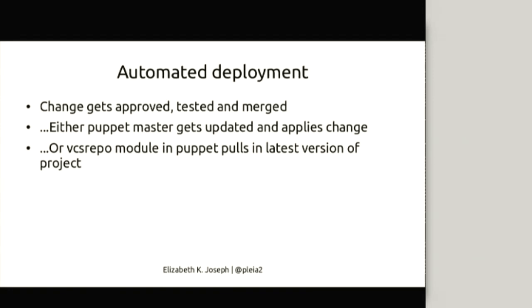In our infrastructure, we also automatically deploy everything. After a change gets tested and approved by core reviewers and merged into the repository, either Puppet will pick it up and apply the change, or if it's a change to one of our continuously deployed pieces of software, Puppet will update with a VCS repo module, the code will get restarted and working in our infrastructure. That mostly works. Fortunately, our customers are developers. It's not a very complicated mode for continuous delivery, but it works for us mostly.